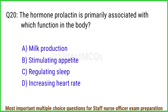Q20. The hormone prolactin is primarily associated with which function in the body? The right answer is option A: Milk production.